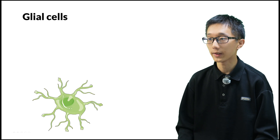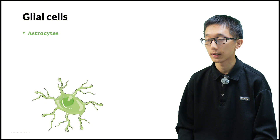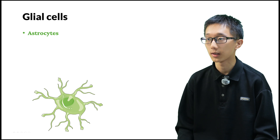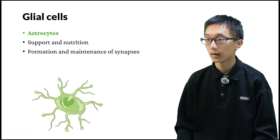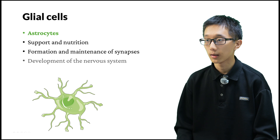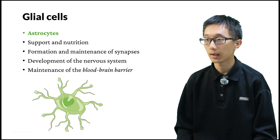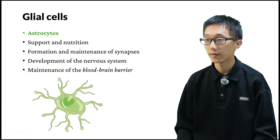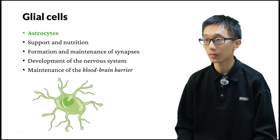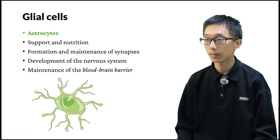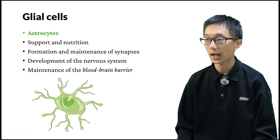Let's look at some specific glial cells. This is an astrocyte — it has many processes, but without the distinct axon or dendrite types. The astrocyte is responsible for supporting and nourishing neurons, formation and maintenance of synapses, development of the nervous system, and maintenance of the blood-brain barrier. The blood-brain barrier is a cellular barrier between blood vessels and brain tissue that prevents harmful substances flowing in the blood from entering the brain.